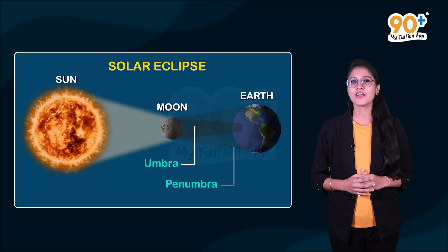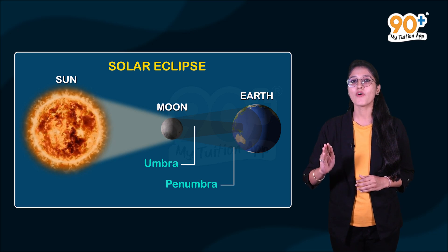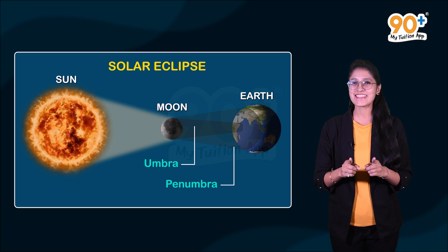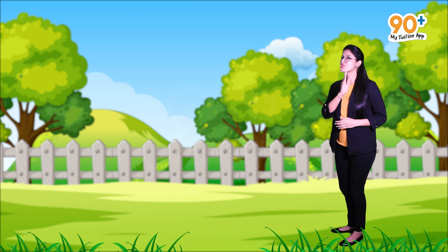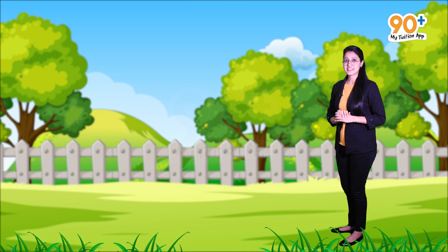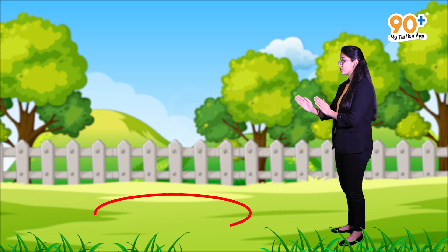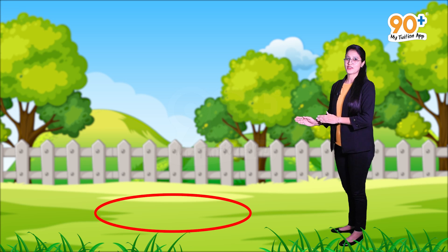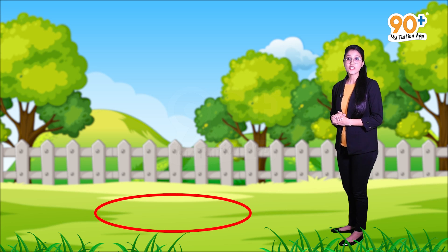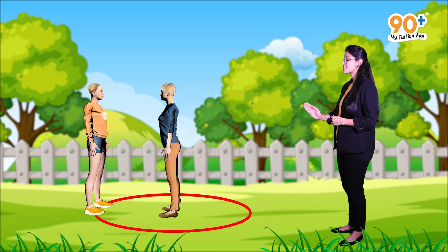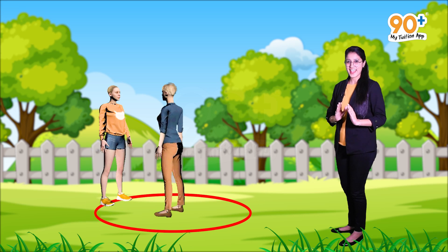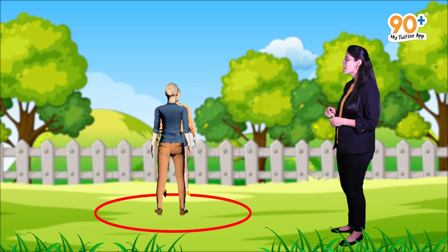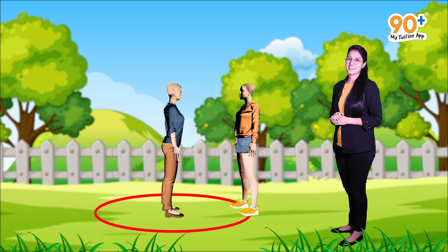To understand the revolution of the moon, let's consider an activity. Draw a circle of radius about one meter on the ground as you can see here. After this, tell your friend to stand at the center of the circle and you revolve around your friend in such a manner that your face is always towards him, as you can see here.